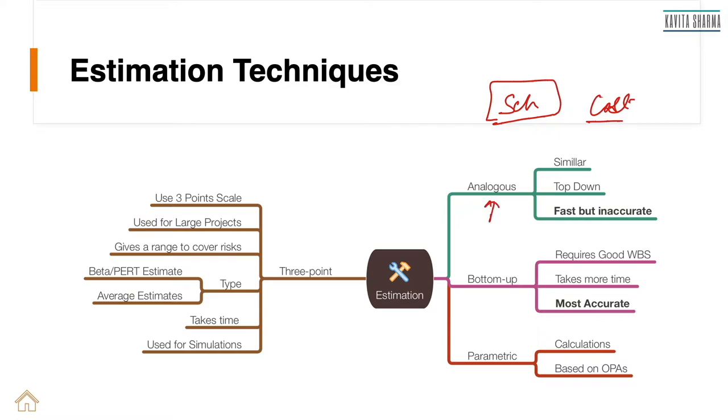Analogous are typically top-down estimates when I'm at the start of the project. Your sales guy comes and asks you how much time it's going to take for this particular project. You don't want to spend a lot of time looking at different components because you're not too sure whether the project is going to come to your organization or not. At that point of time, it makes sense to do analogous estimate.